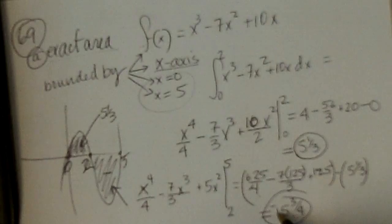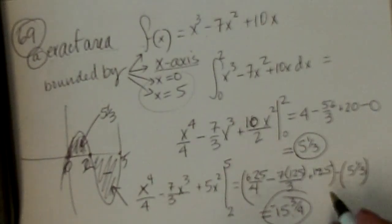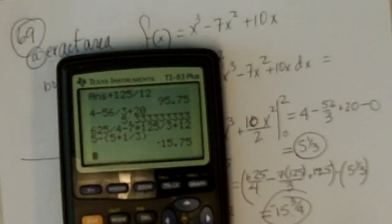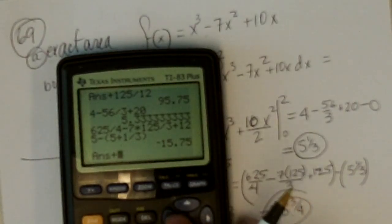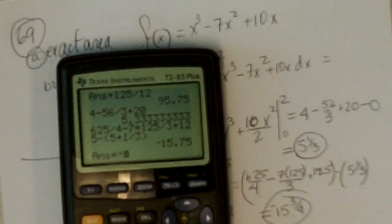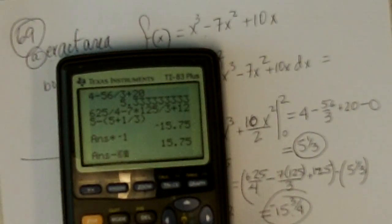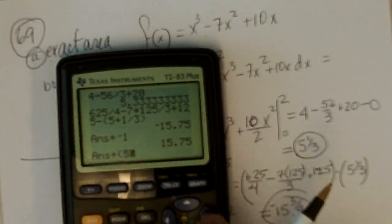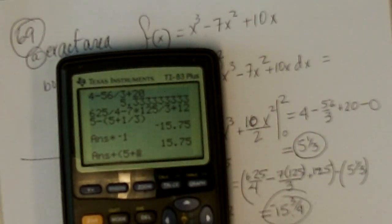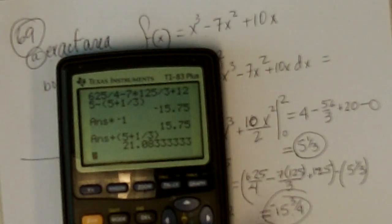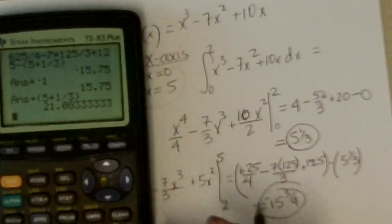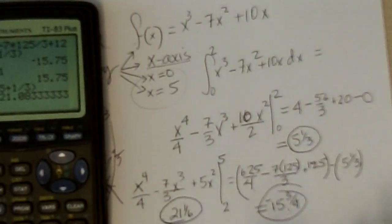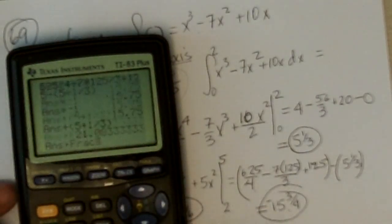So, that's this area. But all together, I got this one plus this one. So, I have to add a positive 15 and 3 quarters with 5 and 1 third. And I get 21, let's just do that. This answer plus that answer times negative 1 to make it positive. Plus parenthesis 5 plus 1 divided by 3. And I get 21 and 1 sixth.